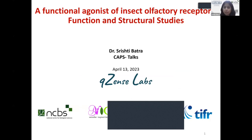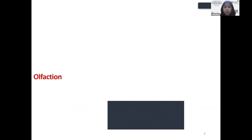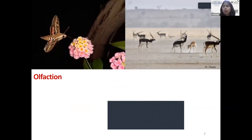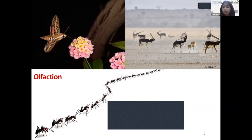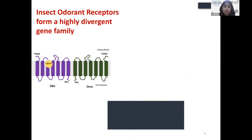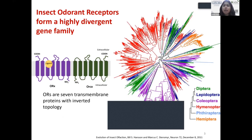To give a brief introduction: what is olfaction? We all know the sense of smell plays a crucial role for insects — like moths finding flowers for foraging, black bugs finding meat, ants following chemical signatures — and humans who use it to identify stale food. Olfaction plays a far more important role. I am interested in insect olfactory receptors; they are a highly divergent protein family and their structural studies have been very limited.